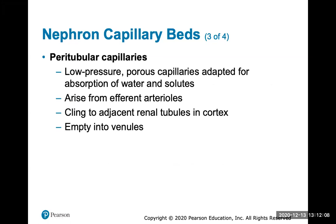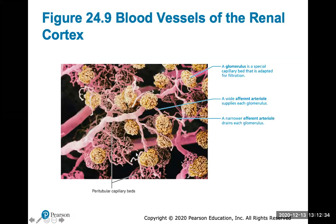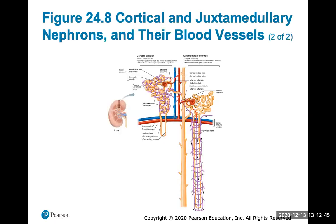The peritubular capillaries are low-pressure porous capillaries adapted for absorption of water and solutes. They arise from efferent arterioles, cling to adjacent renal tubules in the cortex, and eventually empty into venules. The vasa recta are long thin-walled vessels parallel to the long nephron loops and function in the formation of concentrated urine. This shows the glomerulus with the wide afferent arteriole supplying it and the narrower efferent arteriole draining from it, along with the peritubular capillaries and vasa recta.